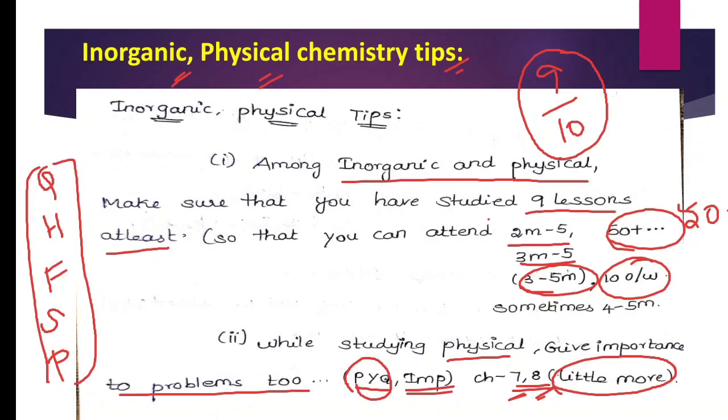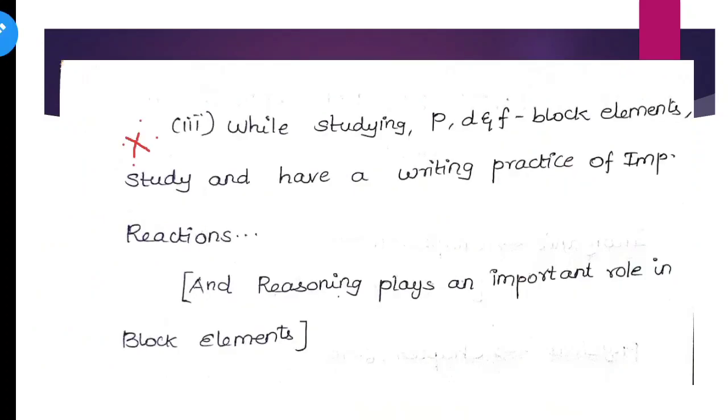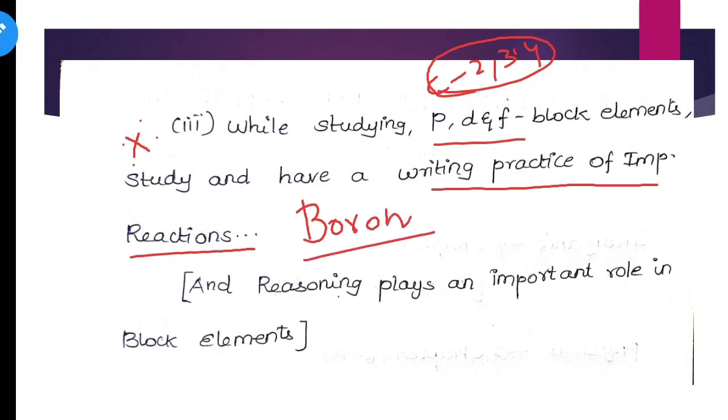Next, very important thing while studying P-block elements, D-block, F-block (transition and inner transition) - that is Chapter 2, 3, 4. Study and have a writing practice of important reactions. Important reactions like boron family, all the reactions, or make a flowchart or mind map for carbon family, ammonia, nitrogen reactions.